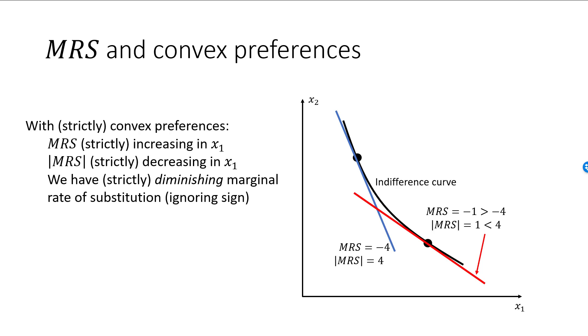With convex preferences, MRS will be increasing in x1, while with strictly convex preferences, MRS will be strictly increasing in x1. The absolute value of MRS will be decreasing in x1 if preferences are convex, and strictly decreasing if preferences are strictly convex.